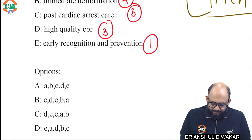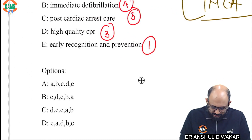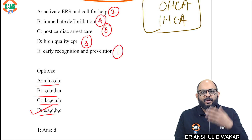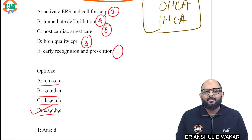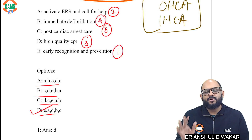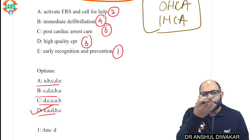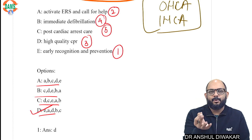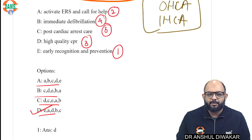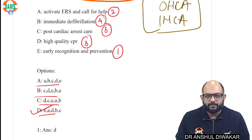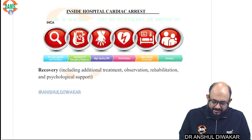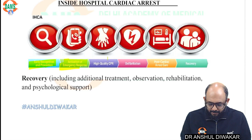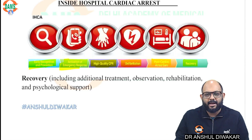Post cardiac arrest care follows, so the rest remains more or less the same. Looking at the options, option D is correct. In these types of questions, if you know even one option that is correct, you are most often right, because usually only one option appears to be correct. So for in-hospital cardiac arrest: first step is early recognition, then activation of emergency response system, then CPR, defibrillation, post cardiac arrest care, and recovery.